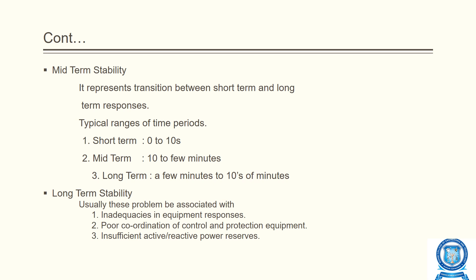Mid-term and long-term stability represent the transition between short-term and long-term response. The typical time ranges are: short-term is 0 to 10 seconds, mid-term is 10 seconds to a few minutes, and long-term extends from a few minutes to 30 or 40 minutes. Long-term stability problems are usually associated with inadequacies in equipment response, poor coordination of control and protection equipment, and insufficient active and reactive power reserves.